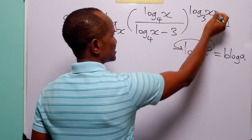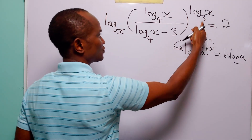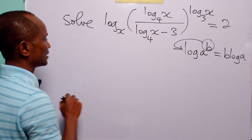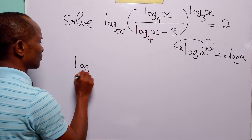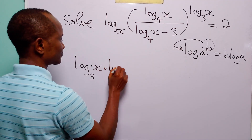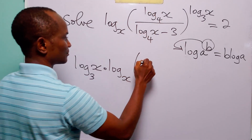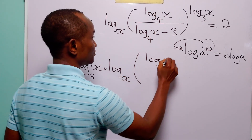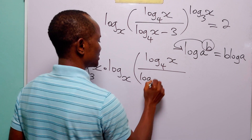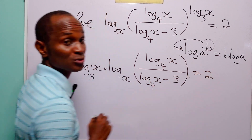In this case, you can see that when we apply the power rule, we can bring down log to base 3 of x to the front of this equation. That is, we have log to base 3 of x multiplied by log to base x of log to base 4 of x divided by log to base 4 of x minus 3. And this is equal to 2.